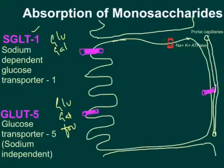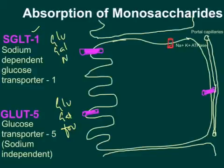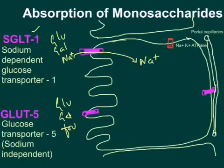SGLT1 is a secondary active, carrier-mediated, sodium-dependent glucose transporter. It is called secondary active because absorption of glucose is sodium-dependent — glucose is absorbed along with sodium. Sodium in the intestinal lumen must be absorbed into the enterocyte cytoplasm, so the process depends on the sodium gradient.